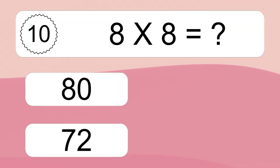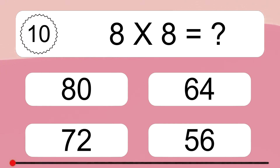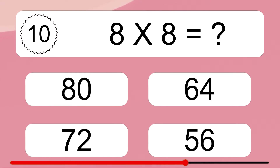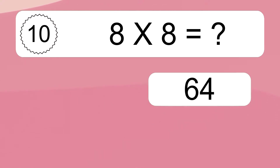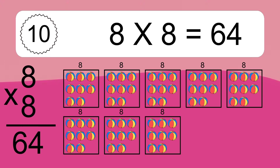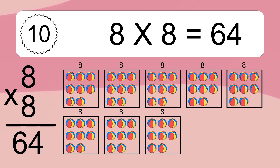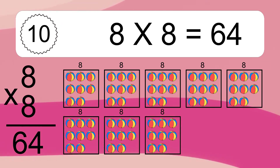8 times 8 equals what? 8 times 8 equals 64. We have 8 boxes and each box has 8 colorful balls inside. If you count all the balls in all the boxes together, you will have 8 times 8 balls. This equals 64 balls.